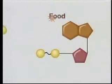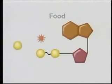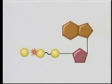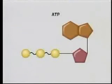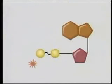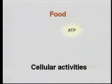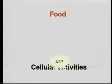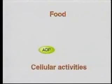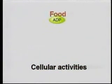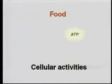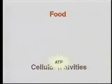Energy from the breakdown of food is used to change ADP to ATP. The energy stored in ATP is transferred and released when needed to power cellular activities. This process may occur as many as 10 million times per second in some cells.